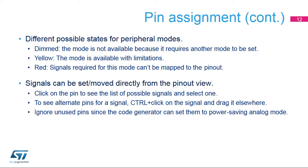There are different possible states for peripheral modes. Dimmed: the mode is not available because it requires another mode to be set. Place the mouse pointer over the dimmed mode to see the reason — it may require a disabled clock source or may have other peripheral dependencies. Yellow: the mode is available with limitations because some options are blocked by conflicts. For example, the USART may not be configured to synchronous mode because all the selectable clock pins are taken.